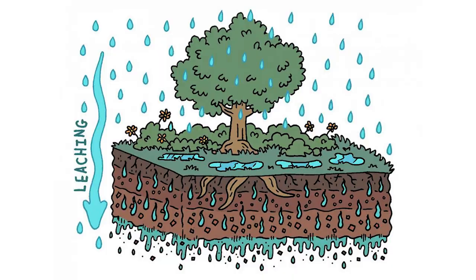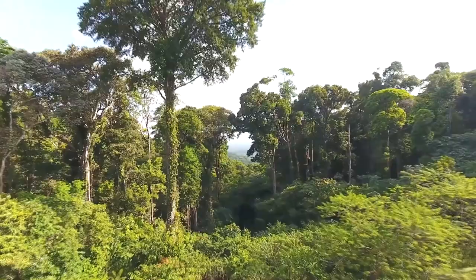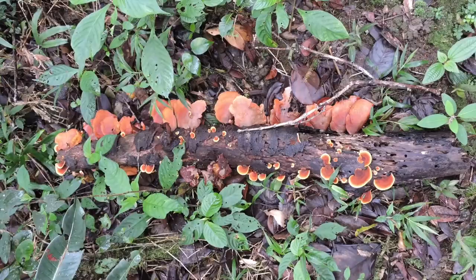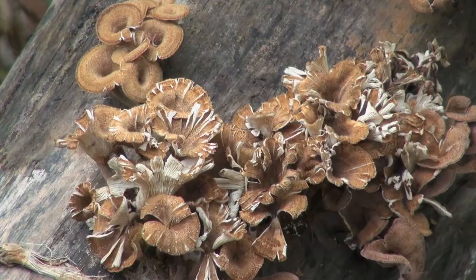Most rainforests are structured in four layers: forest floor, shrub layer, canopy, and emergent. Now, although rainforests are nutrient poor, they still contain lots of life — from fungi to different types of insects.